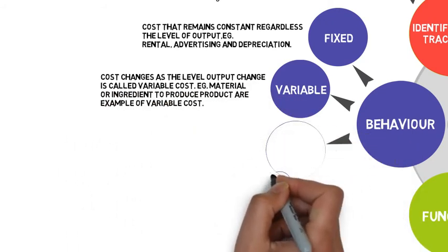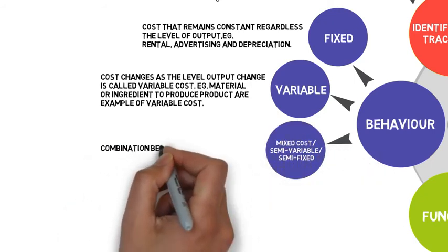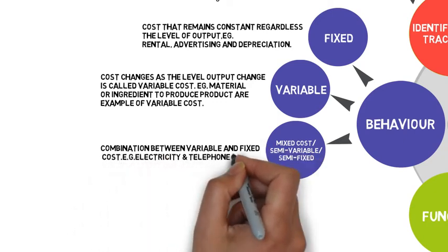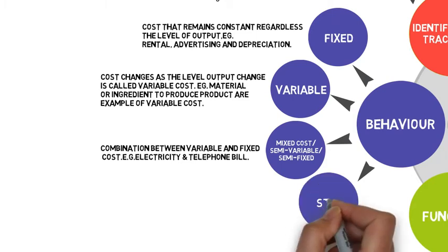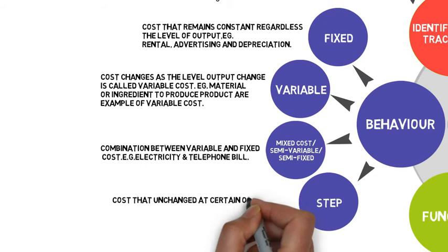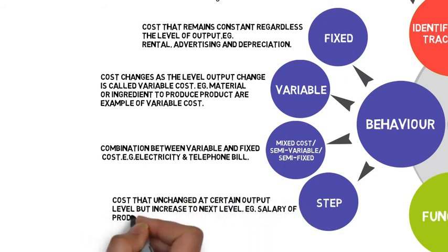Next is mixed cost or semi-variable. As the name suggests, mixed cost is combination between variable and fixed cost. Electricity and telephone bill are the example of mixed cost. Step cost, which defined as cost that unchanged at certain output level but increased to next level, is last group of cost behavior. Salary of production supervisor for example is in this category.